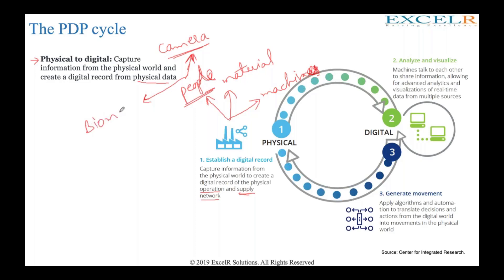Another approach is biometrics — tracking when people are logging in and logging out. We have implemented a solution for a client called Alshaya, headquartered in Kuwait, which manages brands like Mothercare, H&M, Starbucks, and Victoria's Secret. They asked us to help track their people's movement on the factory floor to ensure they are safe at all times. We used RFIDs for that — sensors data you can capture them.